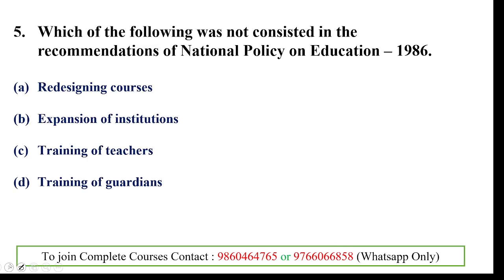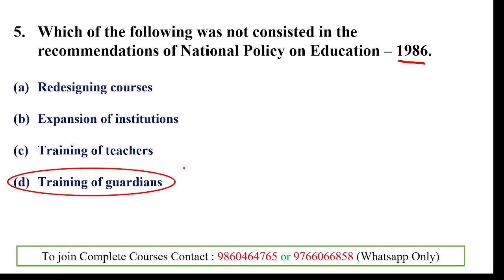Fifth question: which of the following was NOT included in the recommendations of National Policy on Education 1986? The answer is training of guardians or parents. NPE 1986 does not include training of guardians in its recommendations. It does include redesigning of courses, expansion of institutions, and training of teachers.